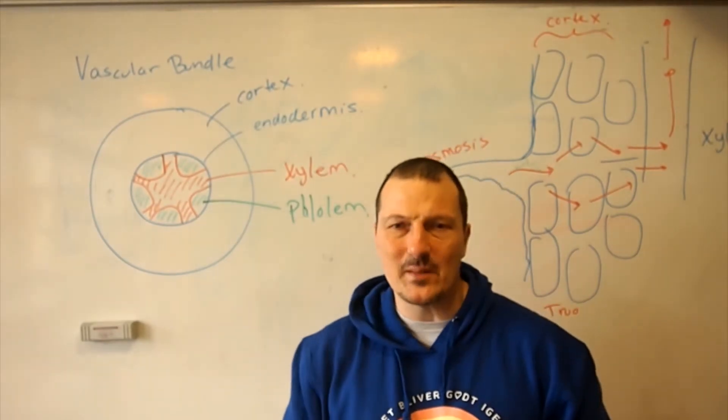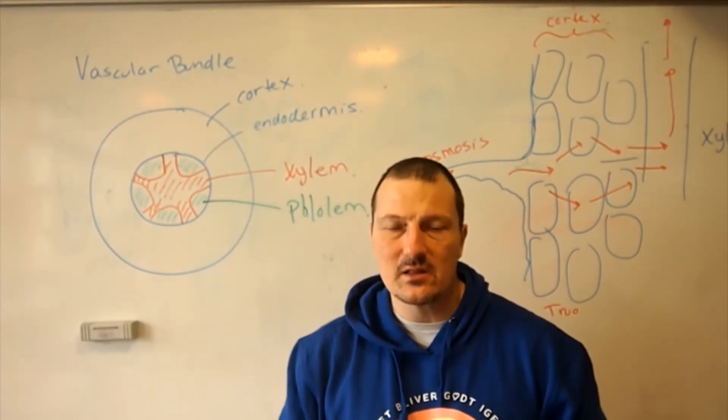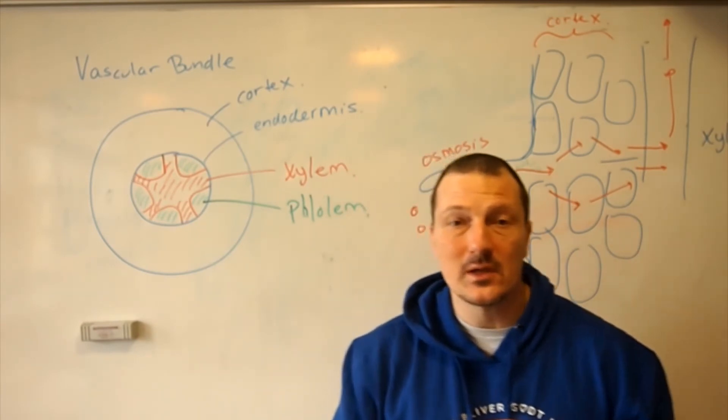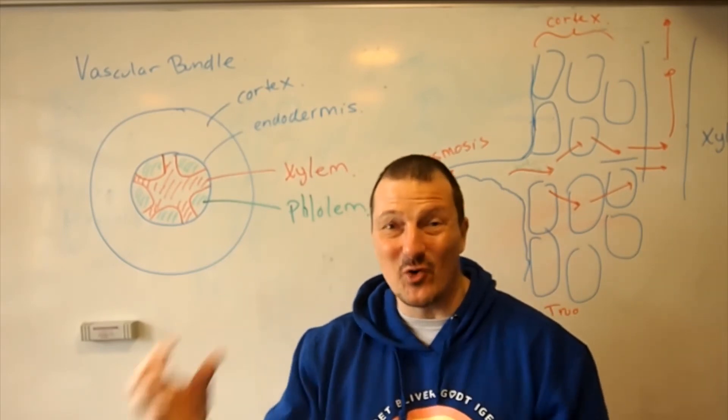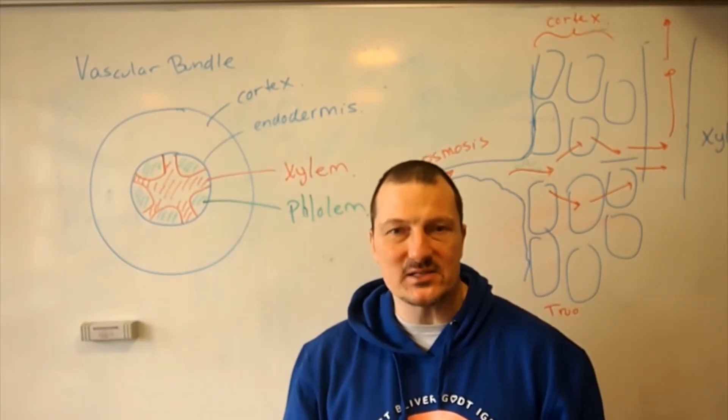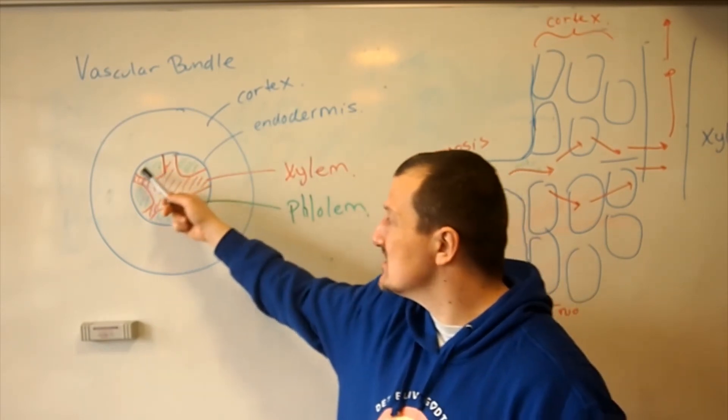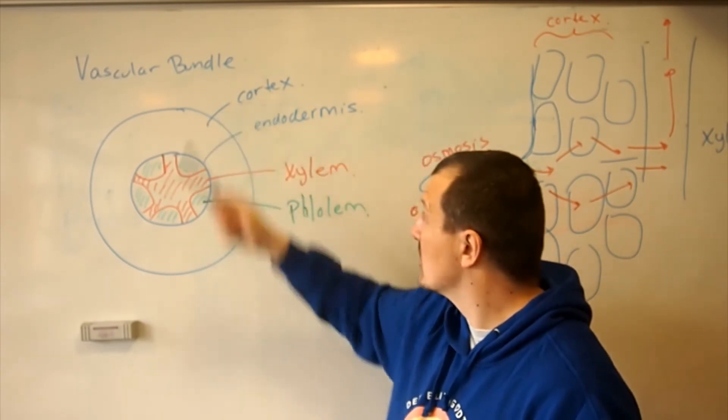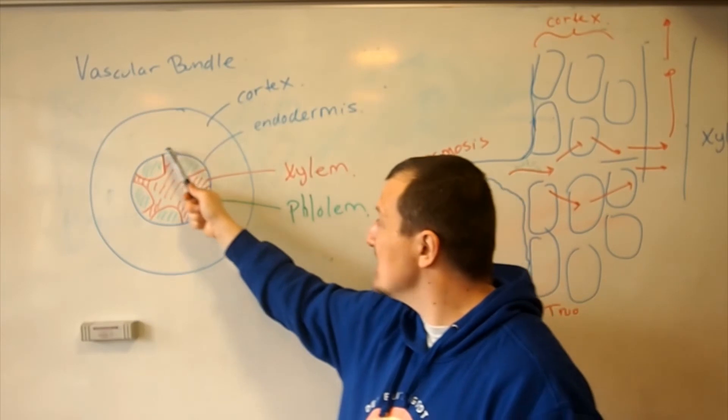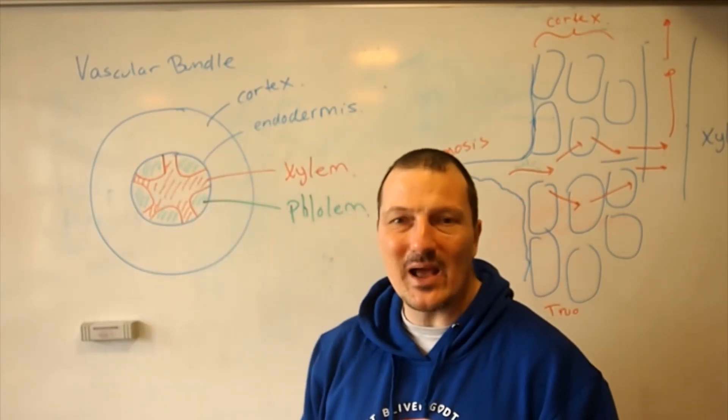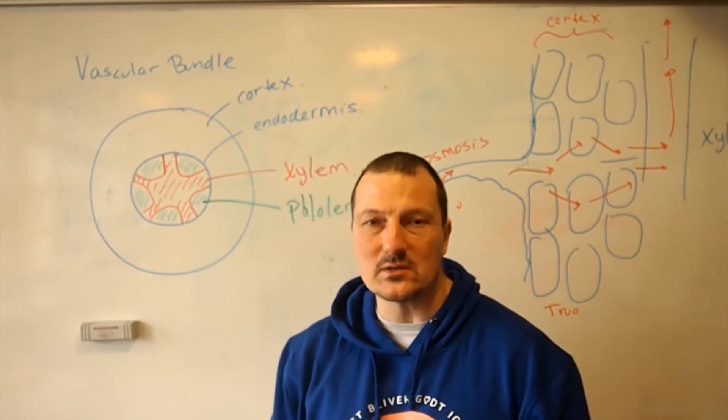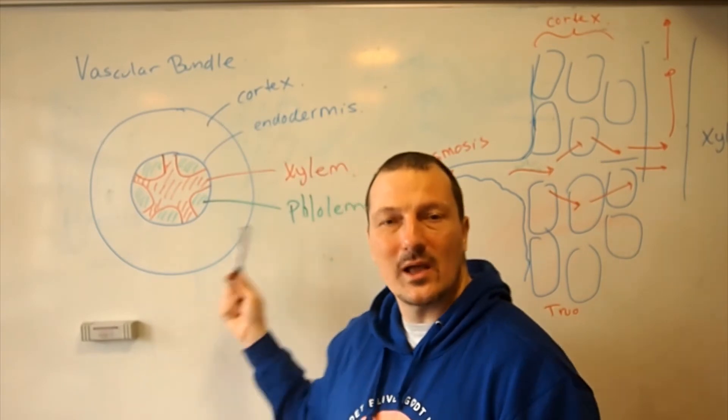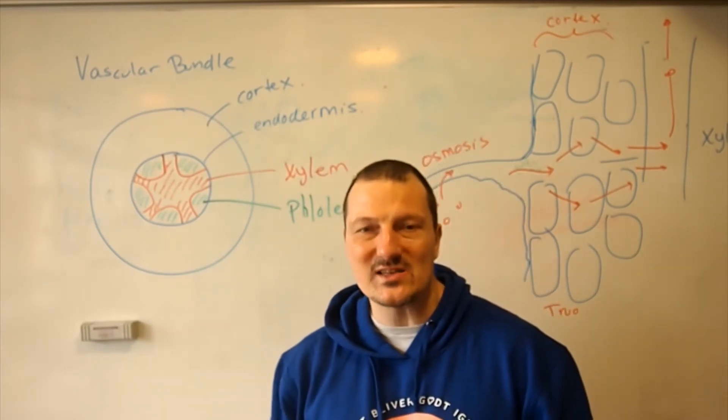So now we've talked about the xylem and the phloem. Inside the plant, these are usually structured in what we call a vascular bundle. A vascular bundle is a little bit like when you have all the cables in your home and you put them in the same place. The plant tends to do the same. This is a cross section of the root. Over here you have the cortex and then you have the endodermis. Inside here we have the xylem and the phloem together as these bundles.